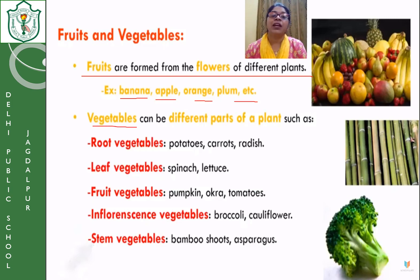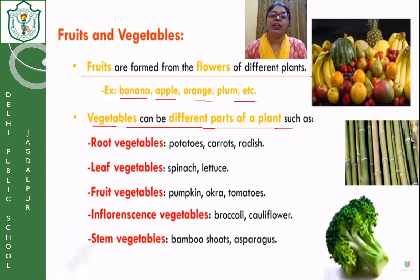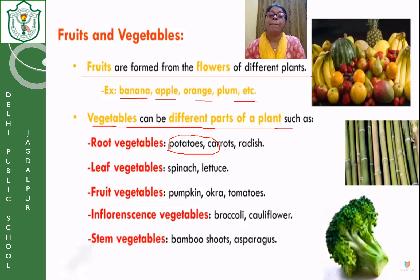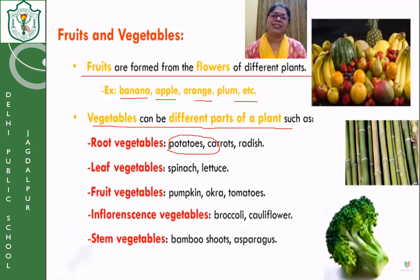Vegetables can be defined as the different parts of the plant. We eat different vegetables — most children love potatoes. Potato, carrots, and radish are root vegetables. Plants store their prepared food in their roots, causing the roots to swell, and those are eaten as vegetables. However, potatoes are called underground stems, not underground roots — sweet potato is the underground root. This distinction you will study in higher classes. The second type is leaf vegetables, like spinach and lettuce.